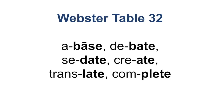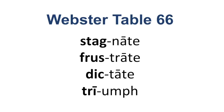We're going to take a look at a few words from the next Webster Speller table. Table 32 — these are all accented on the second syllable, so the first syllable will sometimes schwa, as in a base. On table 66, these are sixth-grade level words accented on the first syllable: stagnate, frustrate, dictate, triumph.